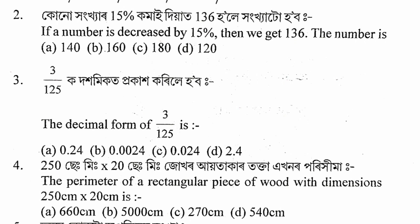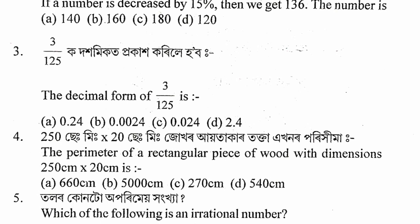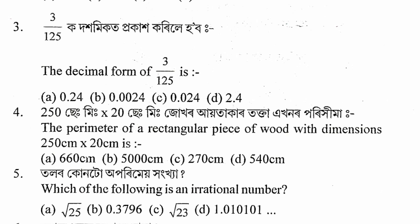X minus 15% of X equals 136, so I am going to get 165. The number of questions is 3 by 125, which is 0.024. So if we compare 125 in the case of the image, what is around 24 by 1000? So if a result is around 3000, it is 0.024.